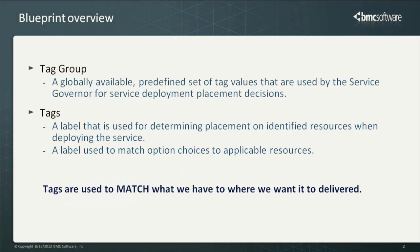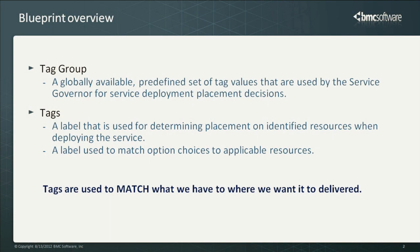Basically, tags are a way of labeling the placement for a new service into a new network container — where do we want it to be? We can also use tags for defining the matching between options. In a previous session, we've talked about options and blueprints, and we're going to bring some of those concepts together. Tags belong to tag groups, and what you basically need to know is that tags are used to match what we have and where we want to deliver it.